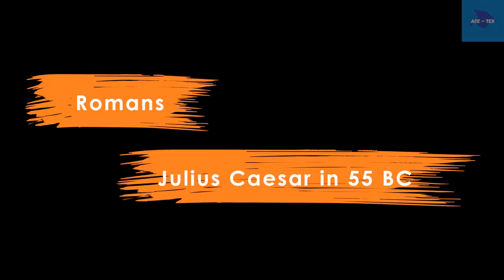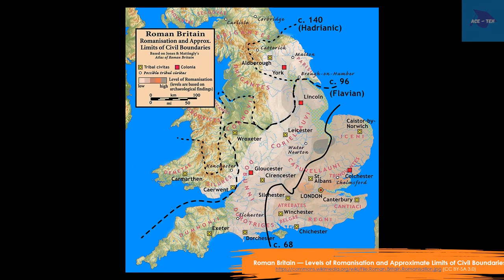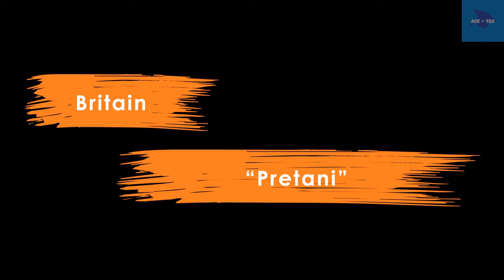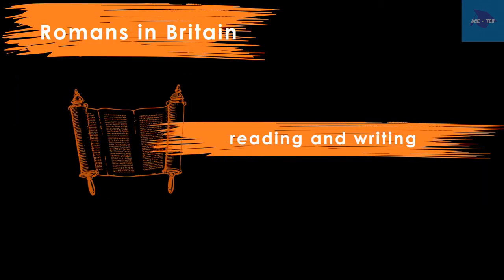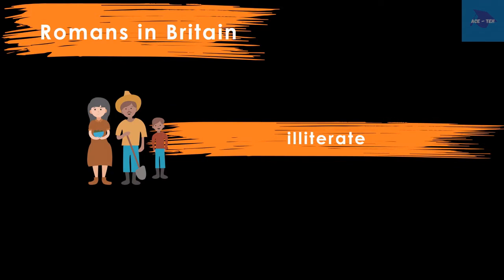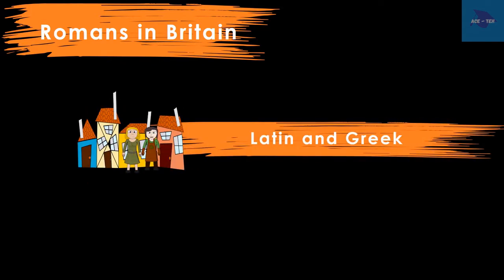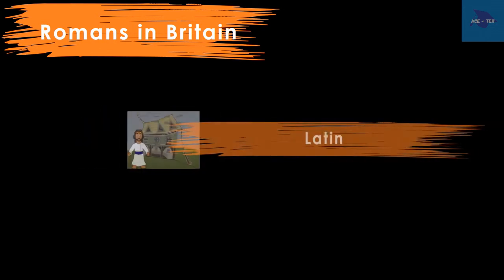In 55 BC, Julius Caesar first visited Britain. But it was in AD 43 that a Roman army actually occupied Britain. The name Britain comes from the word Britanni, the Greco-Roman word for the inhabitants of Britain. The Romans mispronounced the word and called the island Britannia. The Romans brought the skills of reading and writing to Britain. They had a peaceful coexistence with the Celts. The Celtic peasantry remained illiterate, while the town dwellers spoke Latin and Greek, and the rich landowners used Latin.